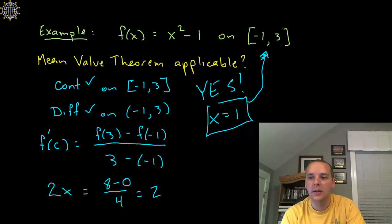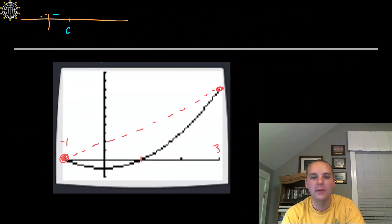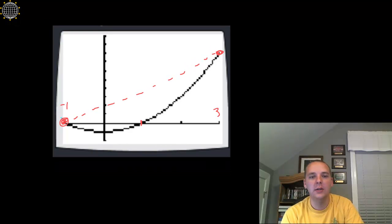To help illustrate this, I went ahead and put a graph down. So here's minus 1 and here's 3, so we can see the average slope between these two guys. But now if we look, where might be a place whose slope specifically at that x value agrees with that average slope?